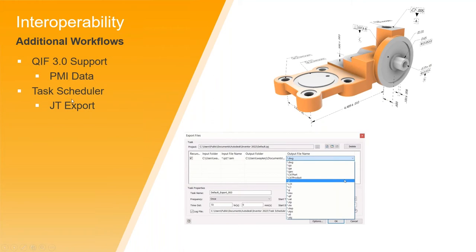There are some other file types that have been added to Inventor for exporting. There's a QIF 3.0 file type. You can utilize a task scheduler to export your file to a JT file extension. Every version of Inventor they're always adding additional file types as far as what export options you have.